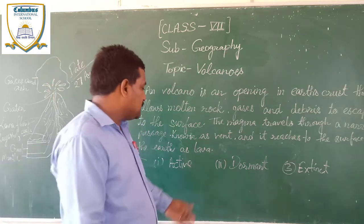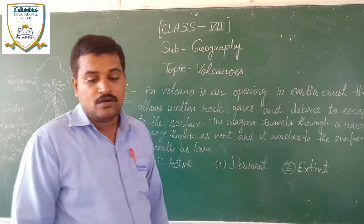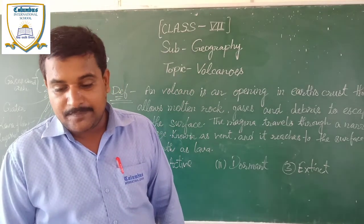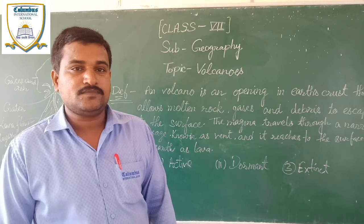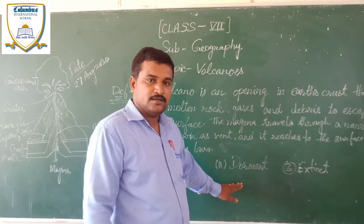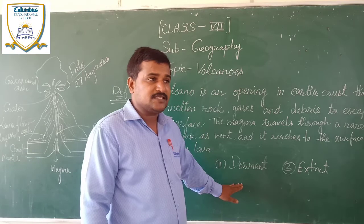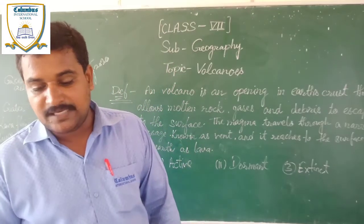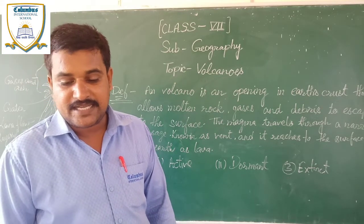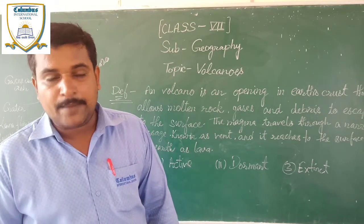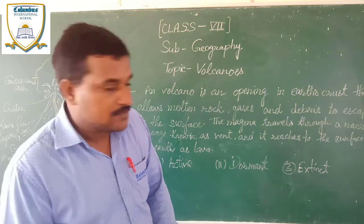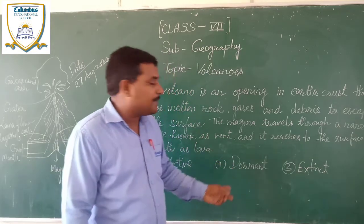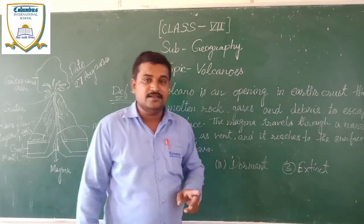The second type is the dormant volcano. Dormant volcanoes are those that have not erupted for a long time. This volcano exists, but it has not erupted. However, there is still a possibility that it could erupt at any time. Mount Fujiyama in Japan is an example of a dormant volcano.